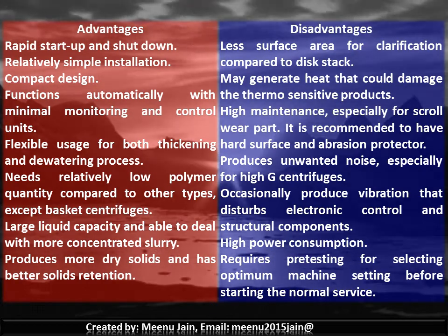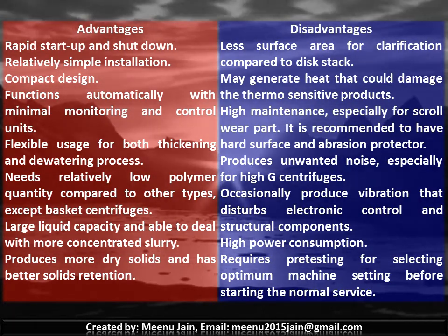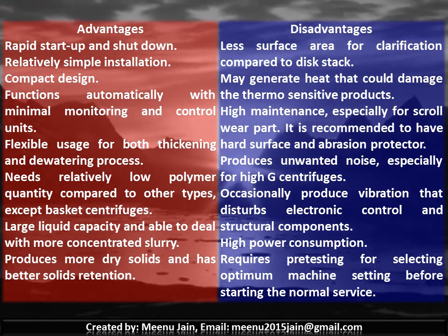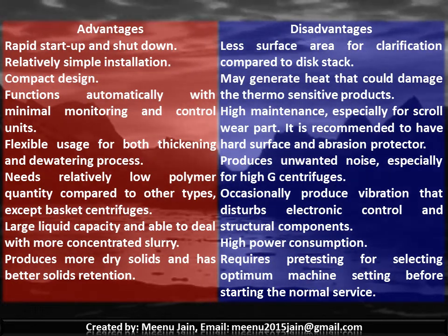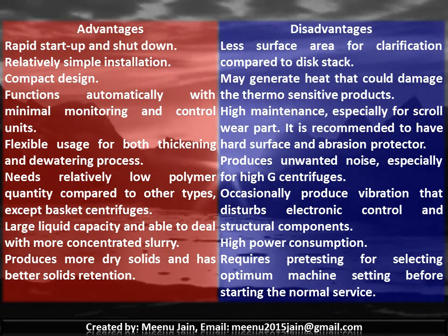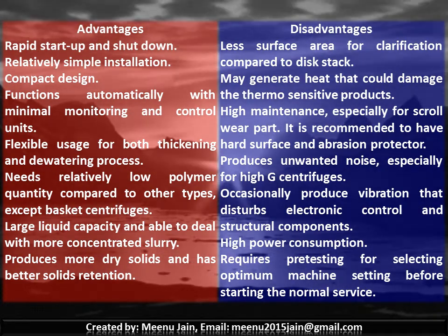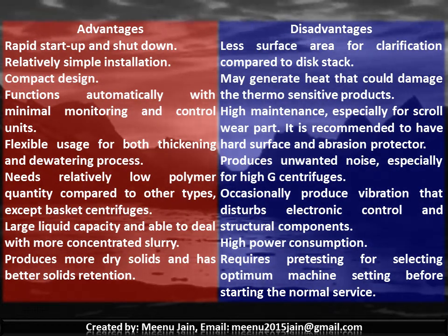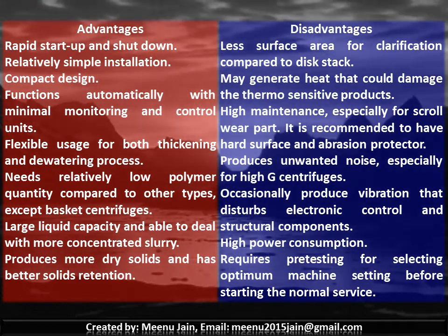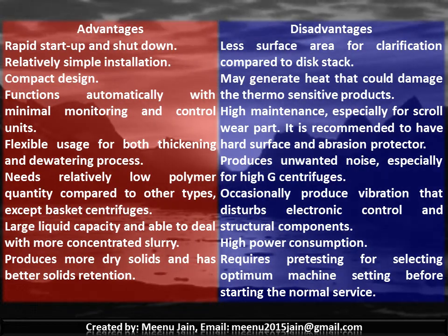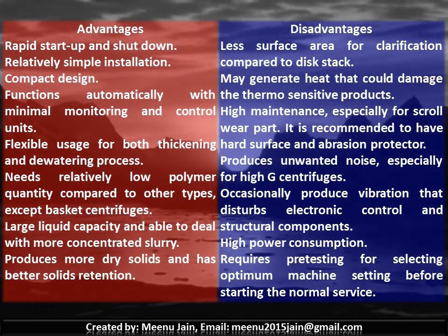Advantages of solid bowl centrifuges include rapid startup and shutdown, relatively simple installation, compact design that functions automatically with minimum monitoring, and flexible use for both thickening and dewatering. It requires relatively low polymer quantity compared to other types except basket centrifuge. It can handle large liquid capacity, deal with more concentrated slurry, and produces more dry solids with better solids retention. Disadvantages include less surface area available for clarification, potential heat generation that could damage thermosensitive products, high maintenance especially for scroll wear parts, and occasional unwanted noise and vibration that disturbs electronic controls and structural components.